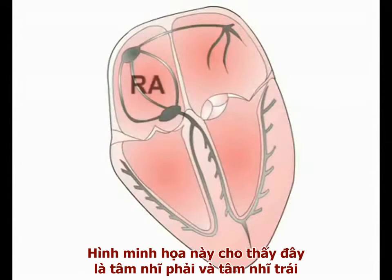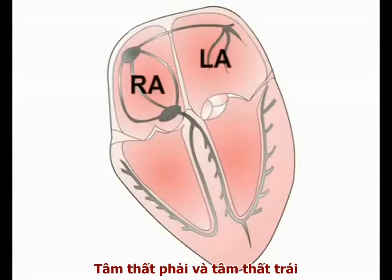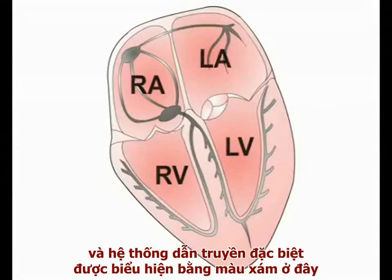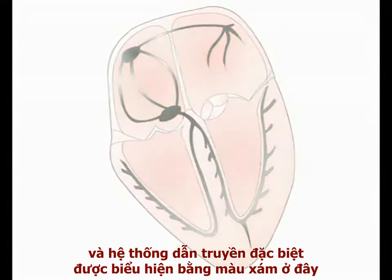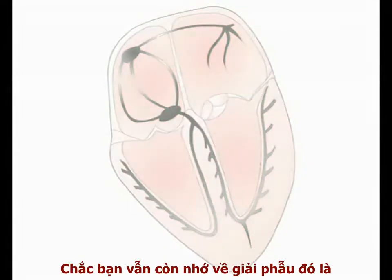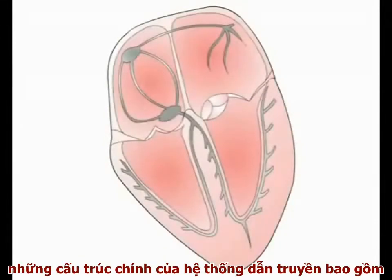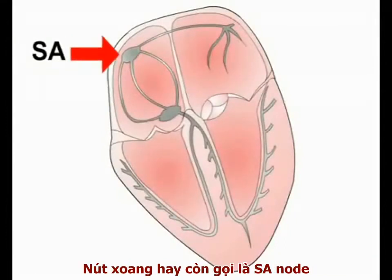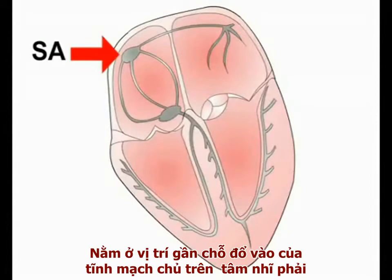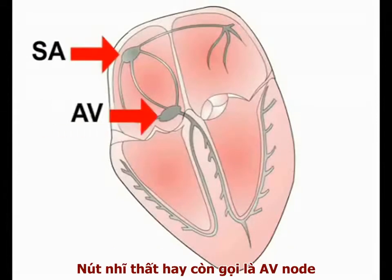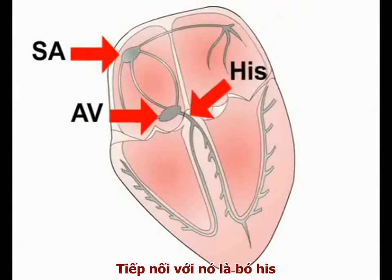The schematic shows the right and left atria, the right and left ventricles, and the specialised cardiac conducting system seen here in grey. The main components of the conducting system are the sinoatrial, or SA, node, situated near the entry of the superior vena cava into the right atrium, and the atrioventricular, or AV, node, leading into the bundle of His.